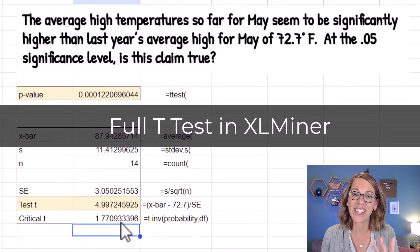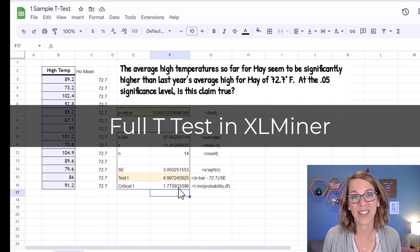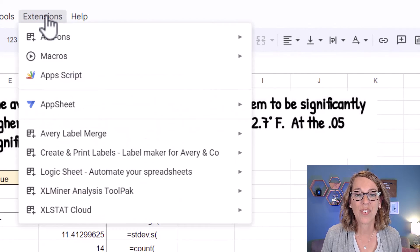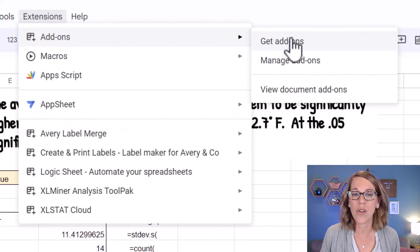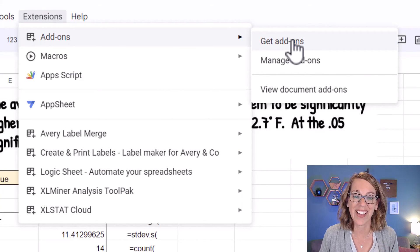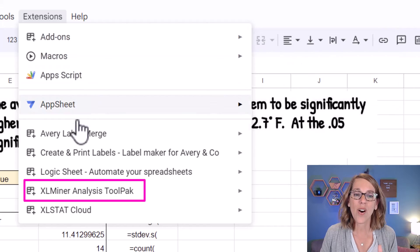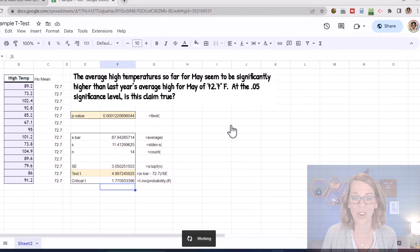Now the final way is the one that's going to give you the most information. And this is using an XLMiner tool pack that I've got here in my extensions. So if you click on extensions, and then you go to add-ons, you can go ahead and choose get add-ons, you are going to download this XLMiner analysis tool pack. Now I already have mine here. So I'm going to go ahead and click on this and then start.